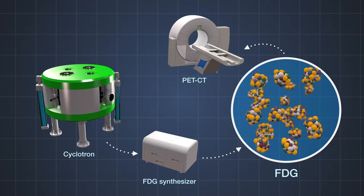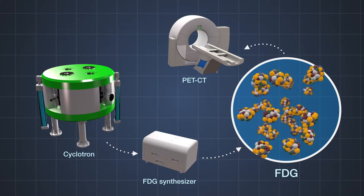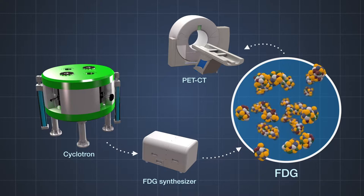Therefore, a cyclotron is the most important facility for producing FDG, a key element of PET-CT.